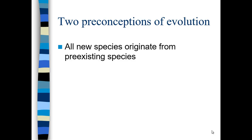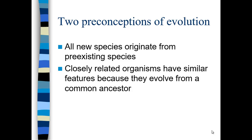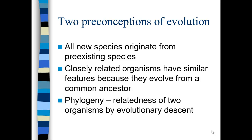The other prong of the theory of evolution is common ancestry. One is natural selection; the other one is common ancestry. Common ancestry means that all new species originate from pre-existing species. From a strict evolutionary perspective, you say that all species on Earth have a single common ancestor. When you look at closely related organisms, especially now in the days that we can look at phylogenetic profiling, you can see similar features because they evolve from a single common ancestor.